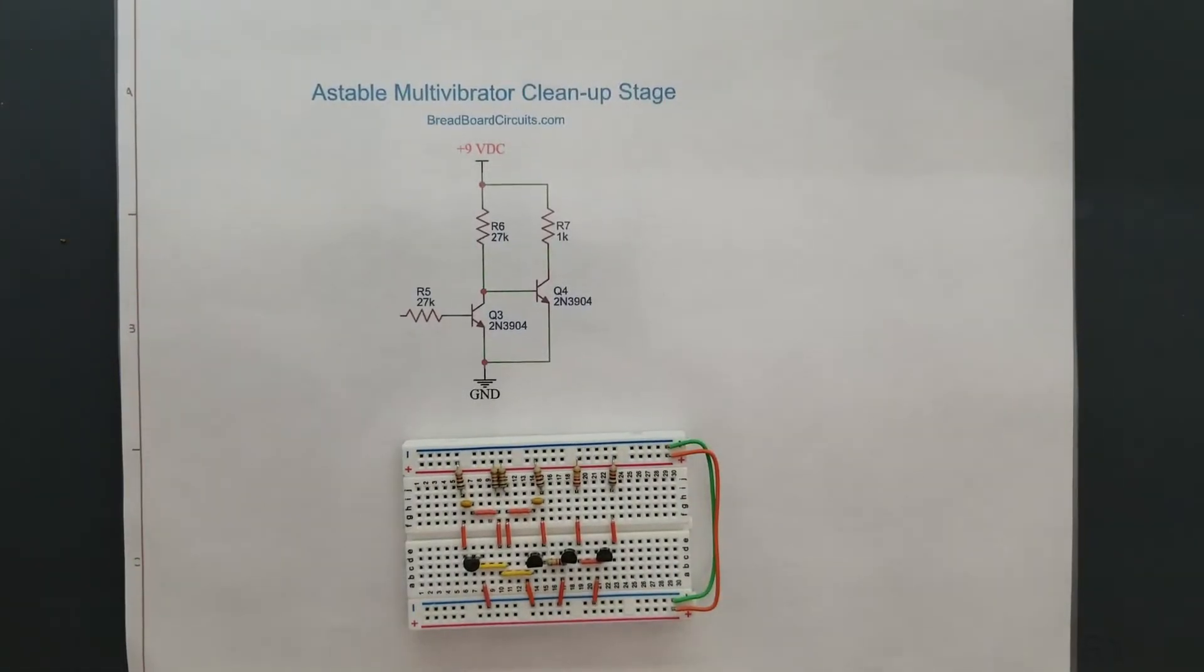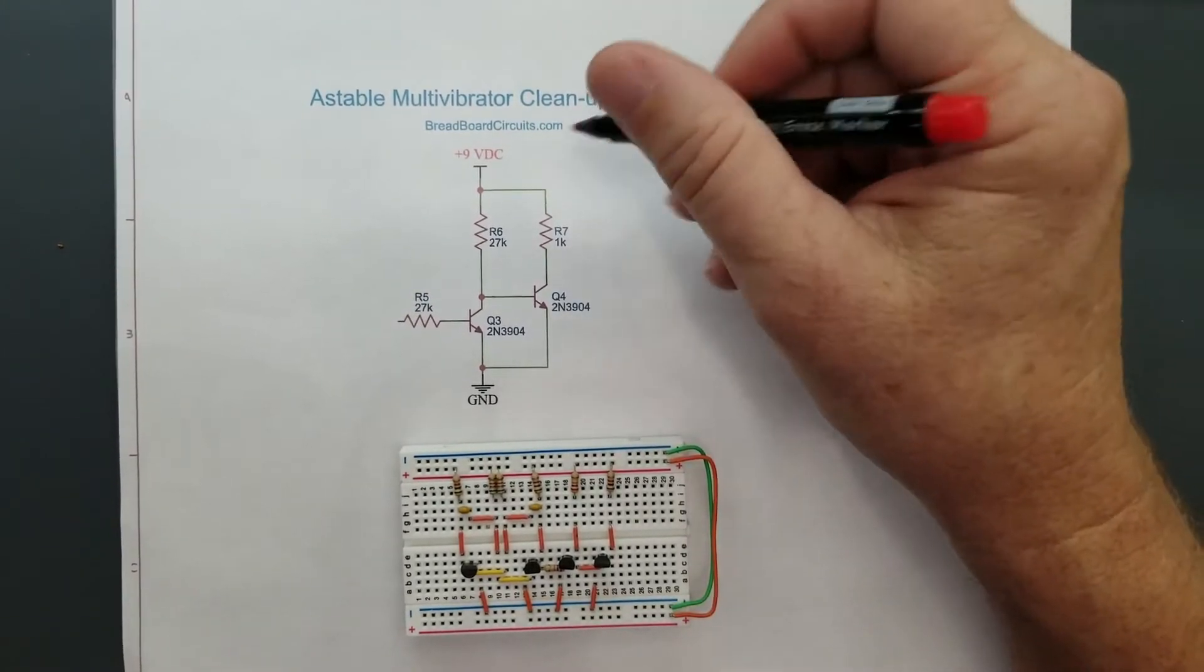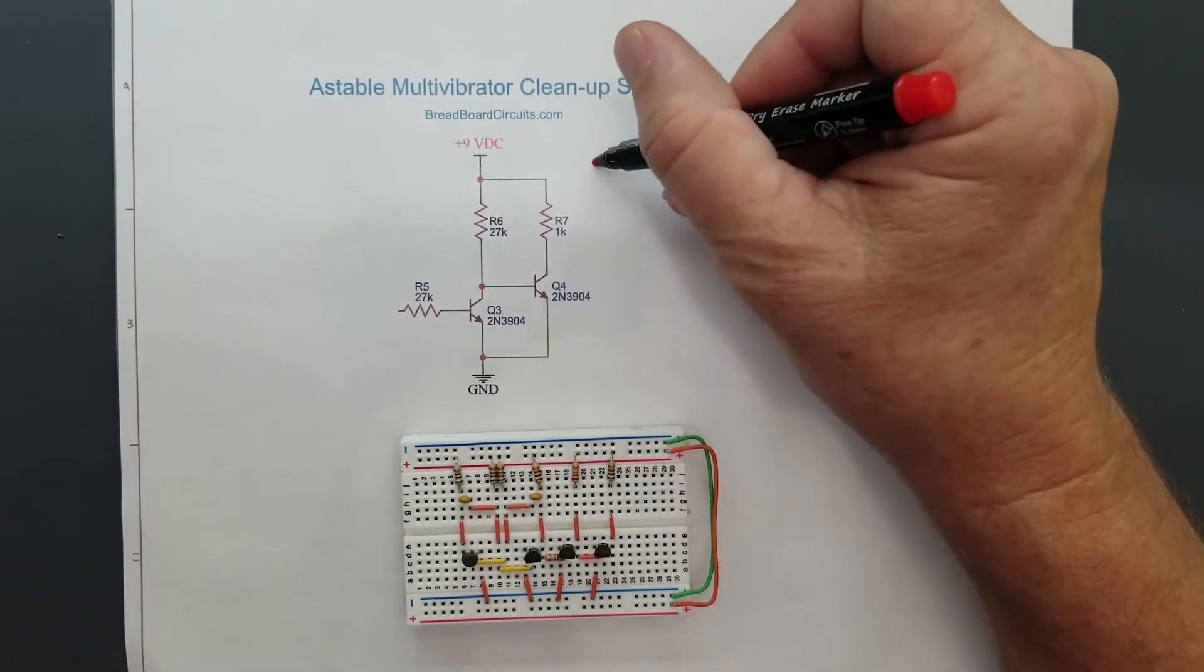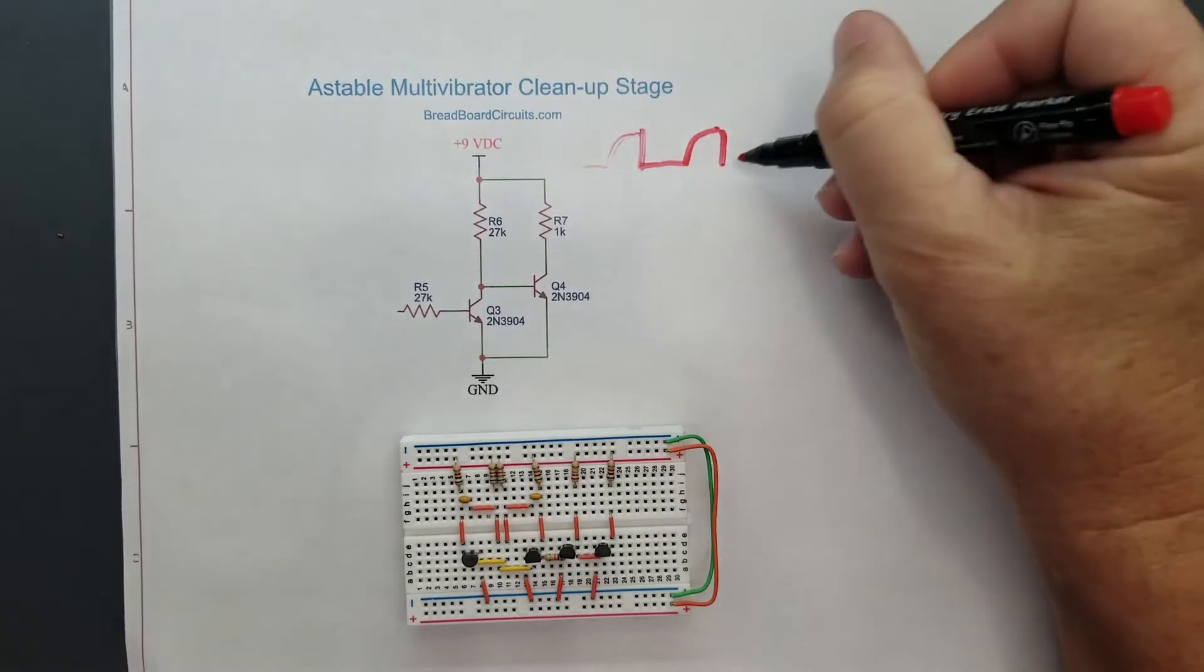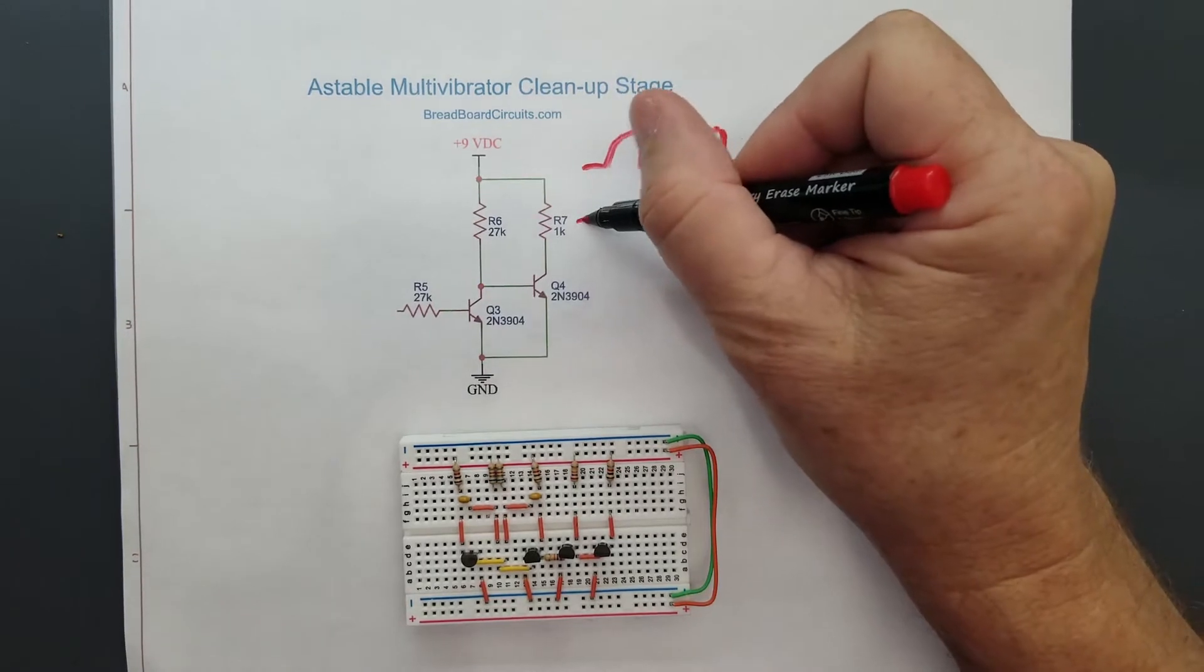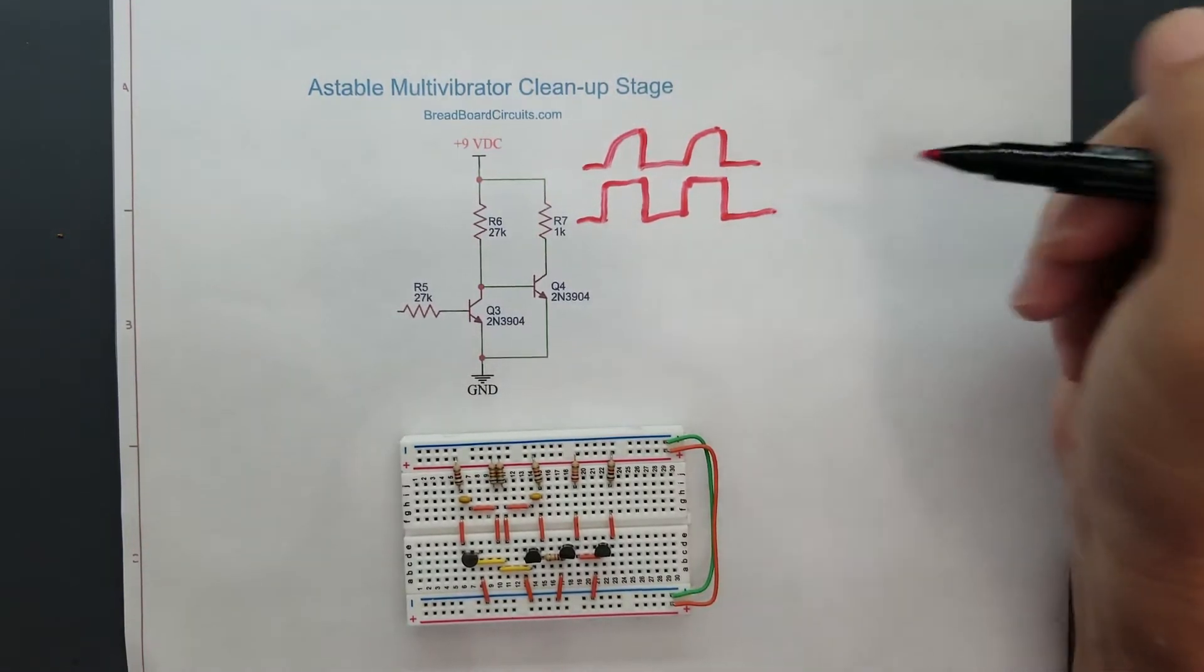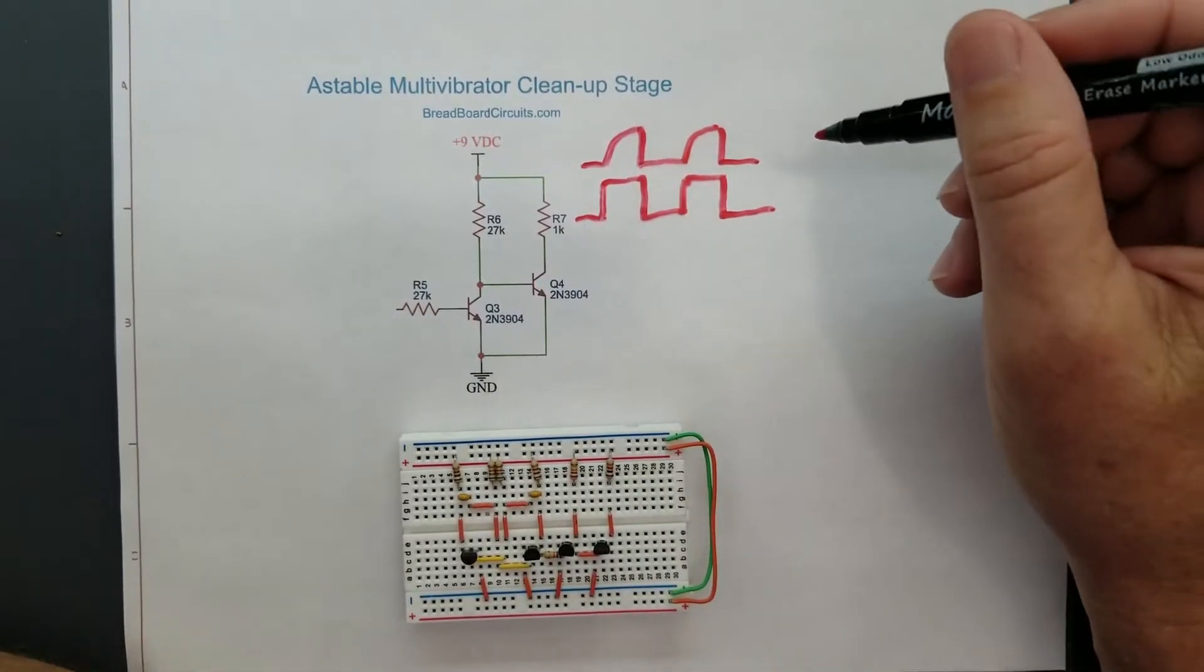So in order to design our cleanup stage, we're going to want to have some design criteria. And so some of the criteria that I came up with is we want to have a non-inverting output. So the output of the basic astable multivibrator is this. And we want to have a non-inverting output. So we want it to be the same. So we're going to want our output to basically look like this. Nice, clean square wave.